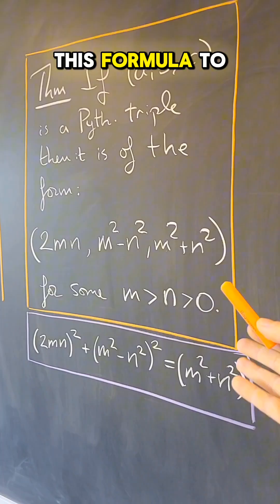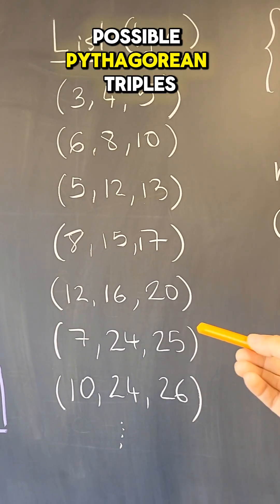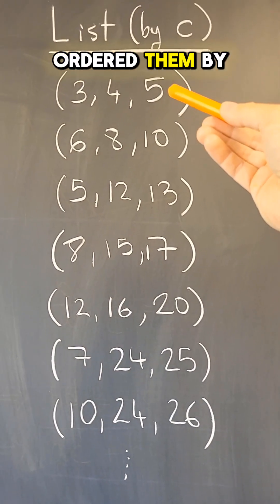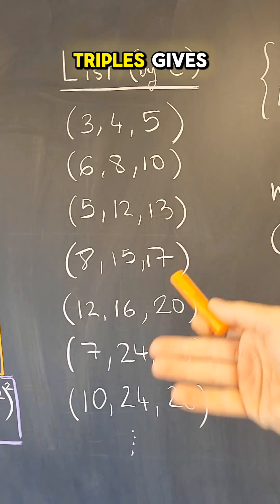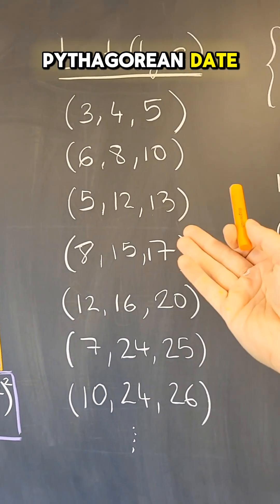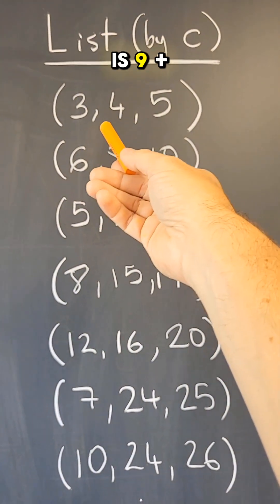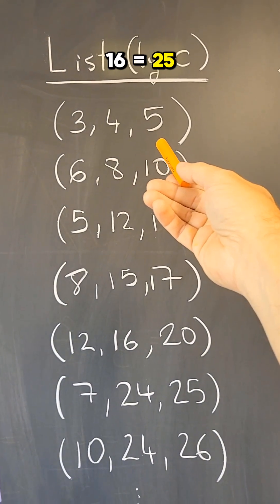We can use this formula to actually list all the possible Pythagorean triples. Here, I have ordered them by the size of the hypotenuse. And if one of these Pythagorean triples gives rise to a Pythagorean date, like this one is 9 plus 16 equals 25.